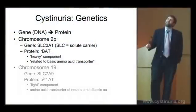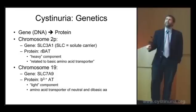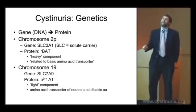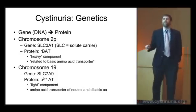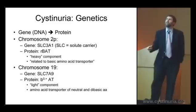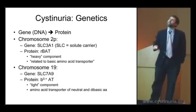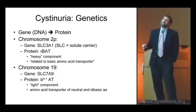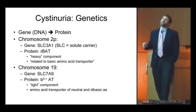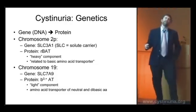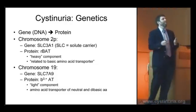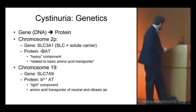Chromosome 19 has the other gene, SLC7A9, and this protein is the light component. It's an amino acid transporter — that's what AT stands for — of neutral and dibasic amino acids. That's what the superscripts mean. These two proteins, the heavy component and the light component, come together and form the cystine transporter.